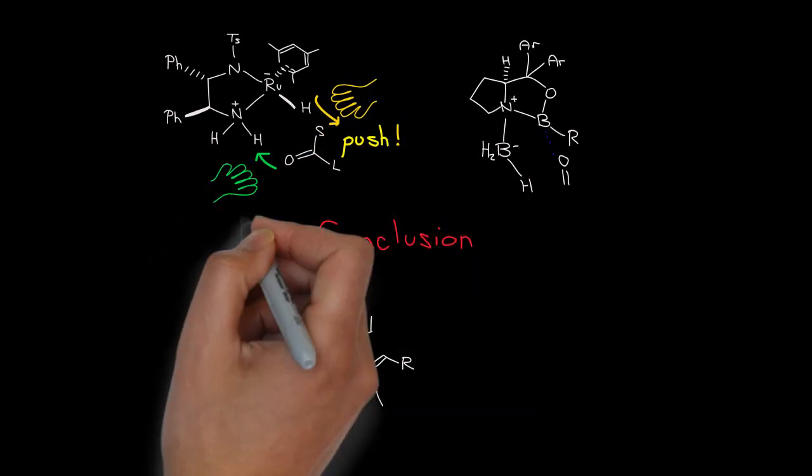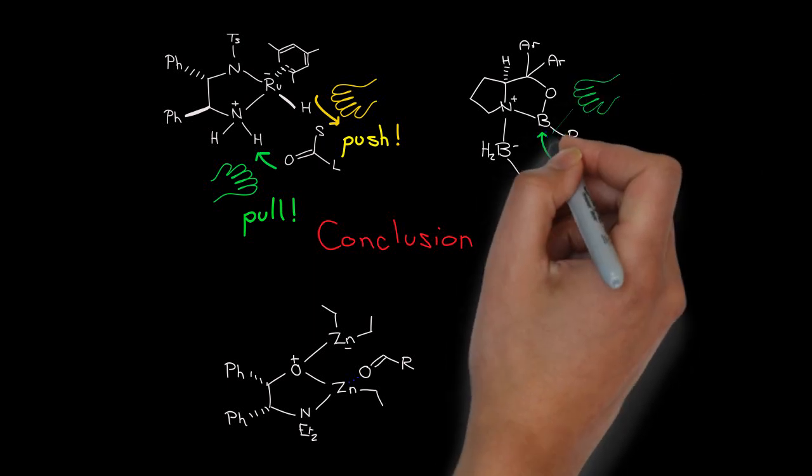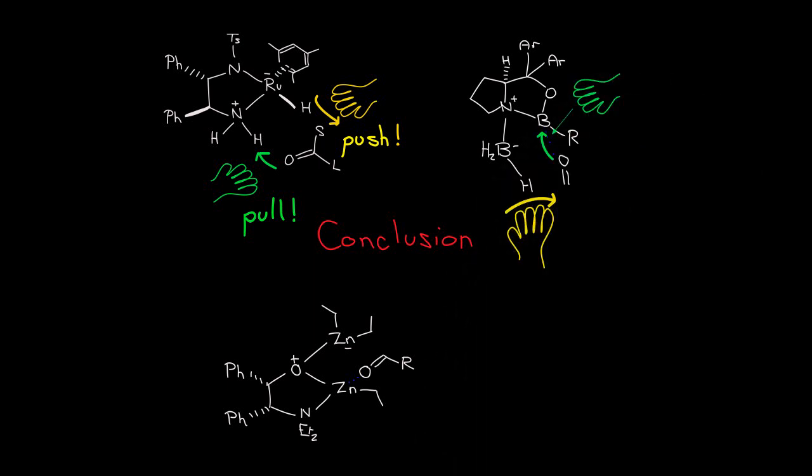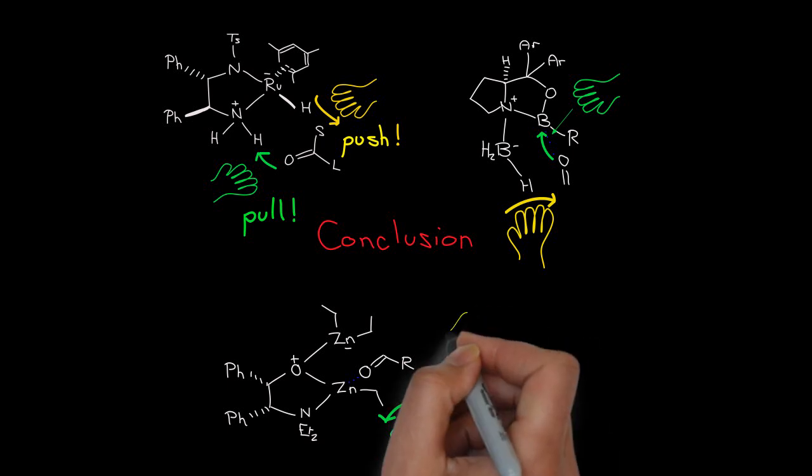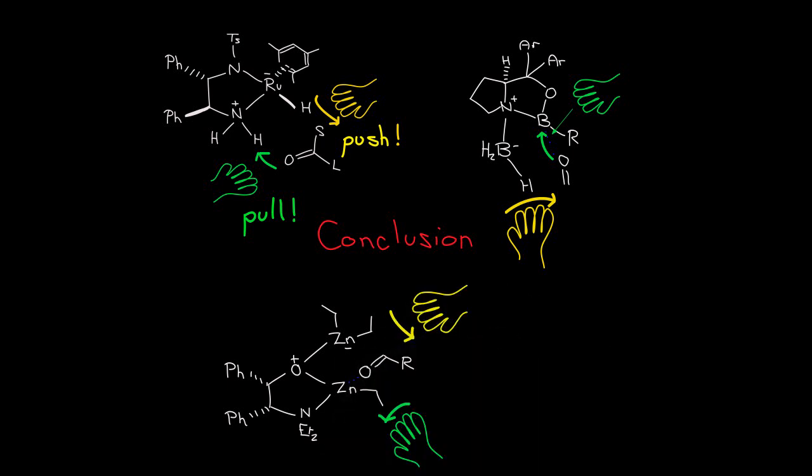If you put your hand on the nucleophile and tug it towards the carbonyl, you can feel the electron flow as the electrons move through the oxygen towards the proton or the Lewis acid in these six-membered ring transition states.